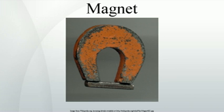Ceramic magnets are made of a sintered composite of powdered iron oxide and barium-strontium carbonate ceramic. Given the low cost of the materials and manufacturing methods, inexpensive magnets of various shapes can be easily mass produced; the resulting magnets are non-corroding but brittle and must be treated like other ceramics. Alnico magnets are made by casting or sintering a combination of aluminium, nickel, and cobalt with iron and small amounts of other elements. Sintering offers superior mechanical characteristics, whereas casting delivers higher magnetic fields. Trade names for alloys in this family include alni, alcomax, hycomax, kalumax, and tyconal.